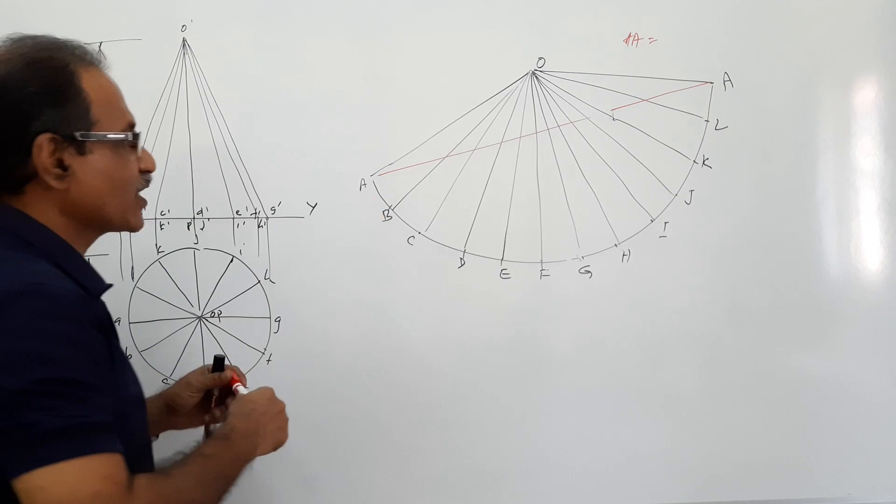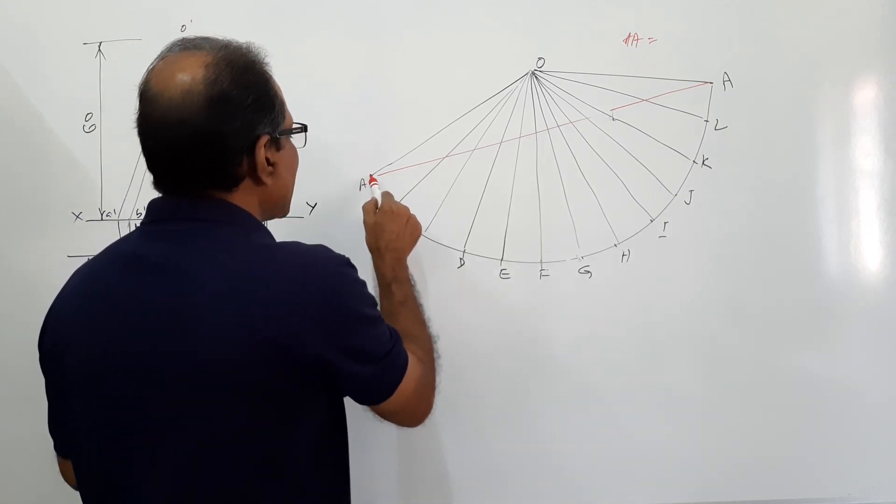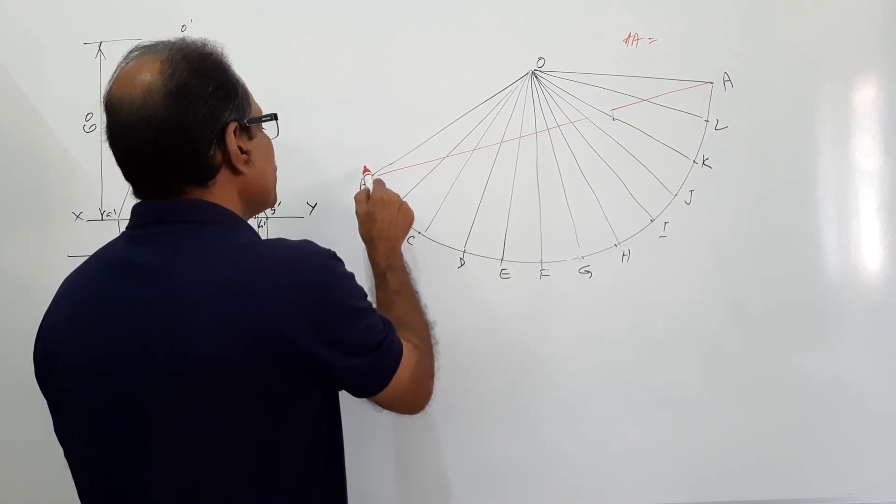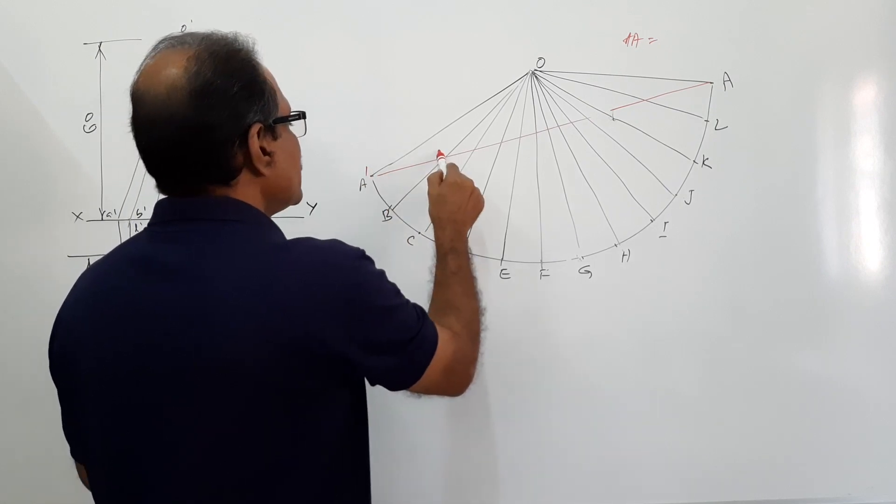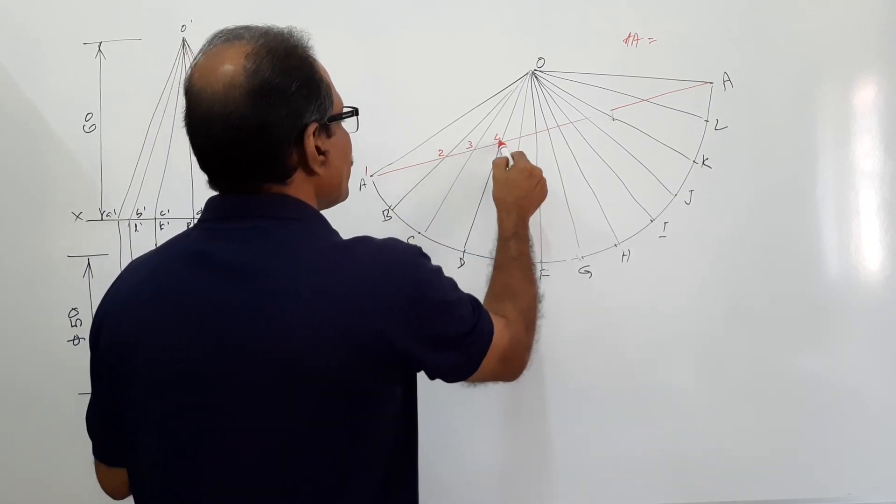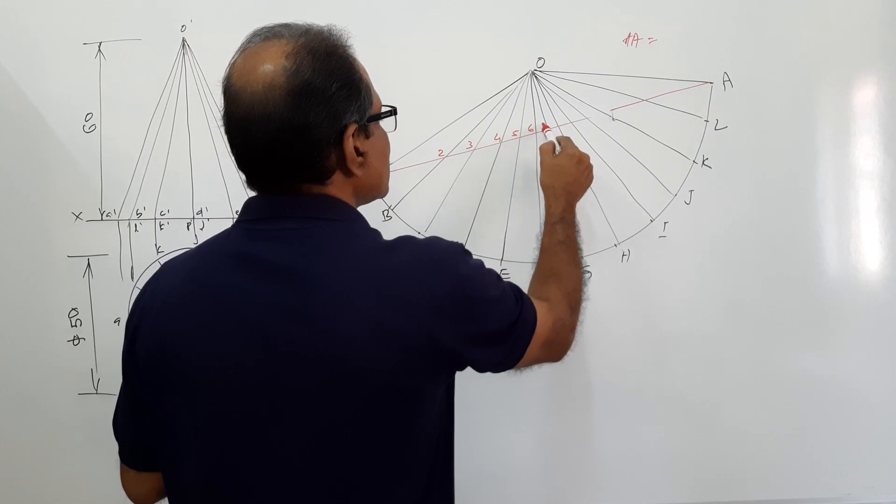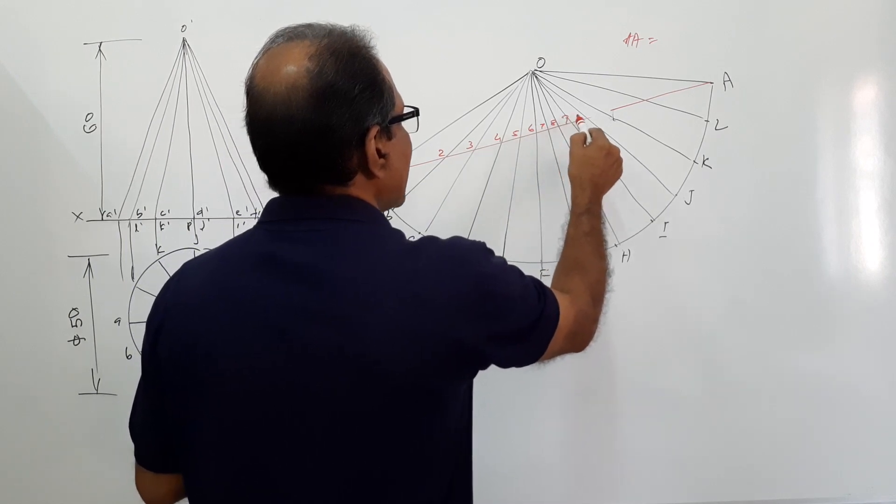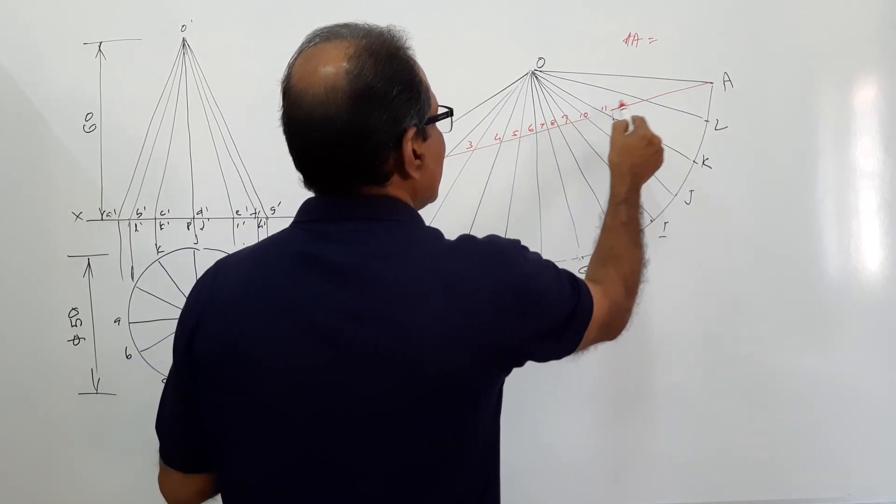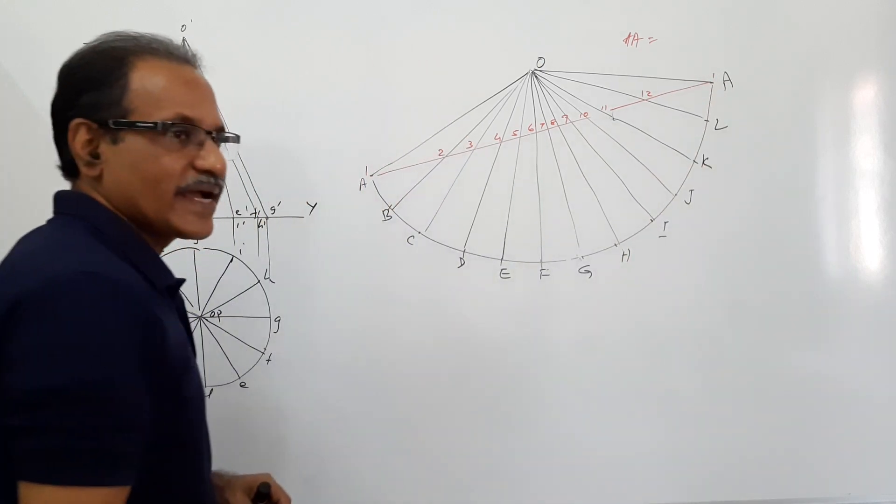Okay, let us name the points. This is the starting point. I name the starting point as 1, 2, 3, 4, 5, 6, 7, 8, 9, 10, 11, 12, 1. Agree? Where is 1? 1 is here, 1 dash.